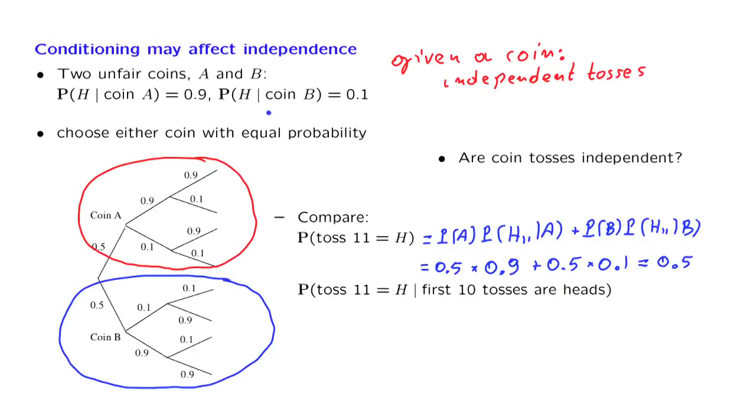If it is coin B, the event of 10 heads in a row is extremely unlikely. So if I see 10 heads in a row, then I should conclude that there is almost certainty that I'm dealing with coin A.